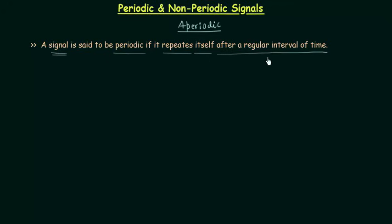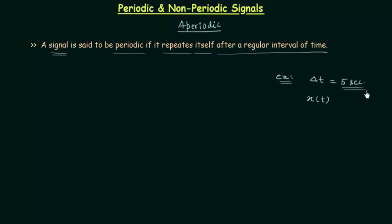Repetition after a regular interval of time means the signal has the same value after that particular time interval. For example, let the time interval delta t equal 5 seconds. For periodic signal x(t), x(t) will remain the same if we increment time by 5 seconds: x(t) = x(t+5), and again x(t+5) = x(t+10).